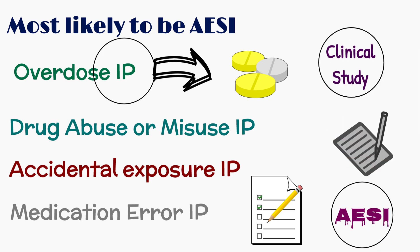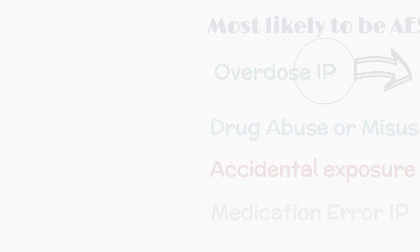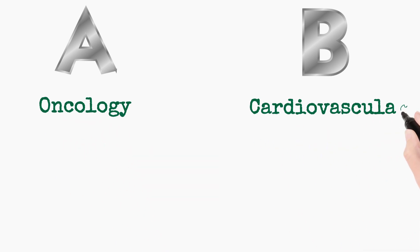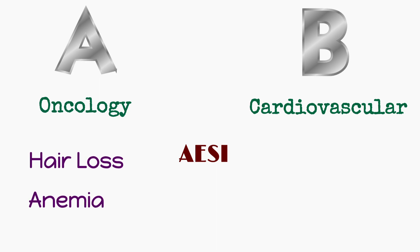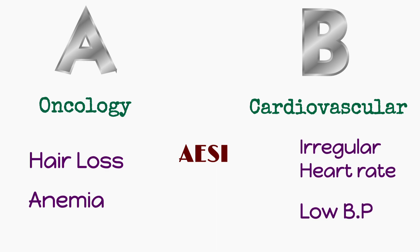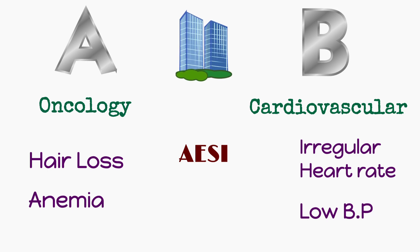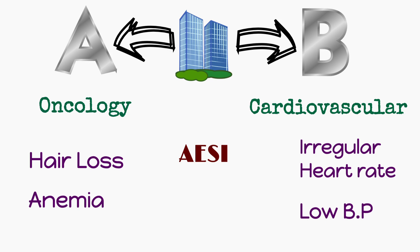So, adverse events of special interest is always study-specific. Let's take an example of Study A and Study B, where Study A is an oncology study and Study B is a cardiovascular study. For the oncology study, adverse events of special interest might be hair loss and anemia, as these events are most commonly observed in oncology drug studies. While for the cardiovascular study, adverse events of special interest might be irregular heart rate, low blood pressure, etc. So in short, what events should be considered as adverse events of special interest is completely dependent on the sponsor and type of study, and such events should be predefined in the clinical study protocol.